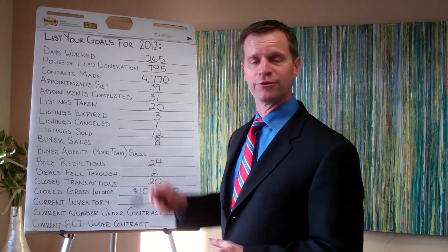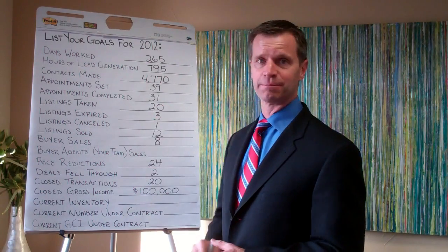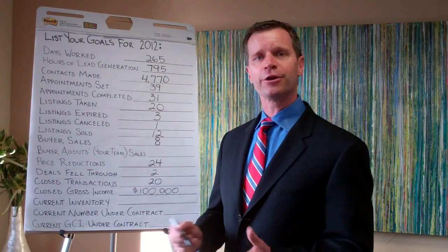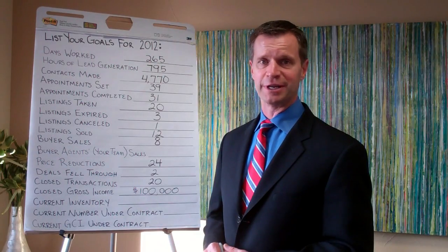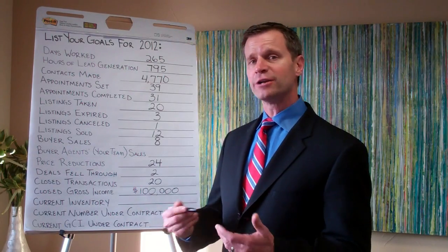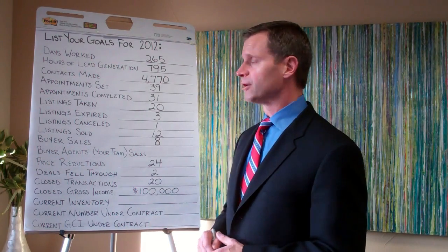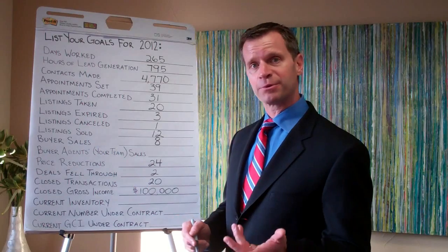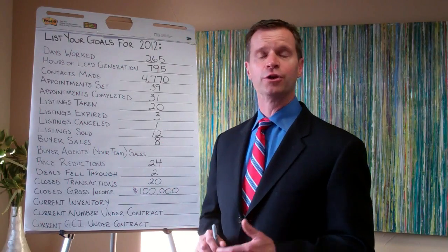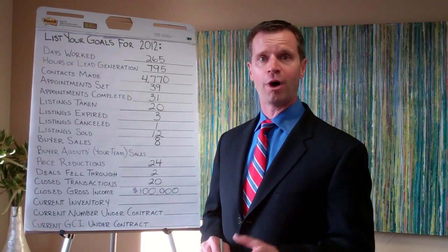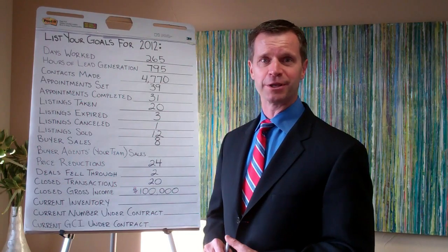Now that we know you've taken 20 listings, the next step is appointments completed. We're going to work off a 65% rate — that's a minimum standard. So taking 65% of the 20 listings gives you 31 appointments that you're going to need to go on in order to take 20 listings for the coming year.